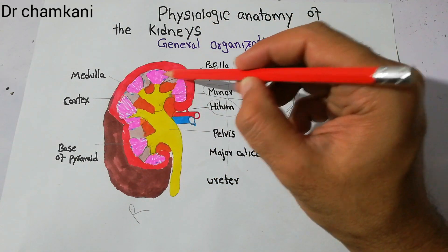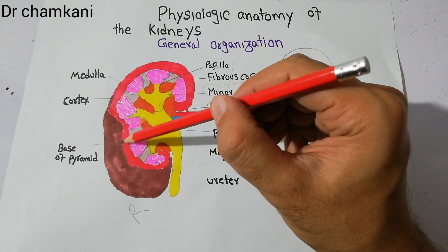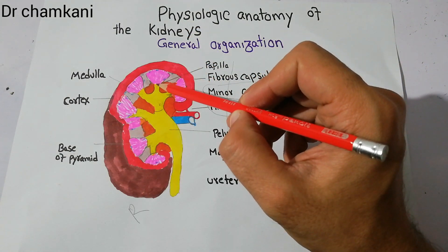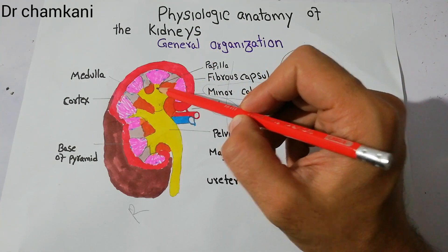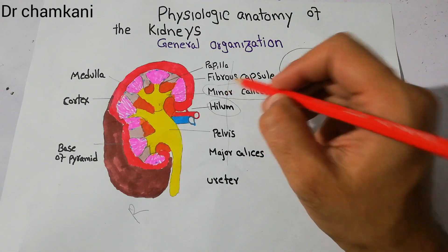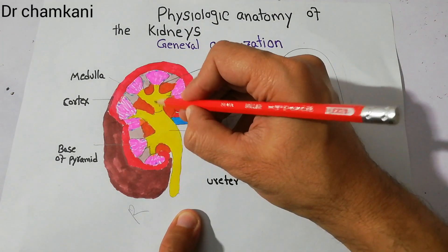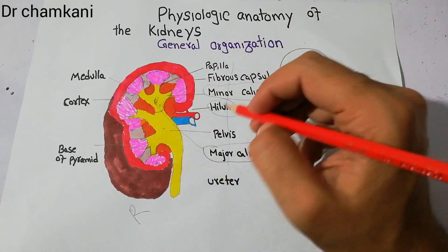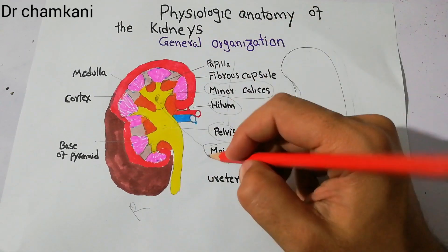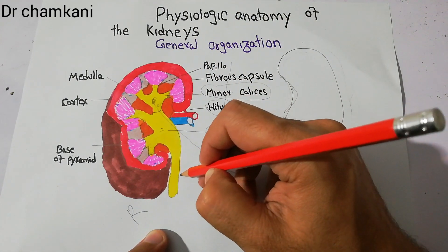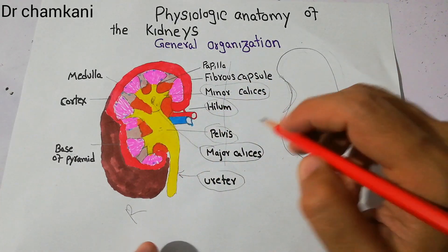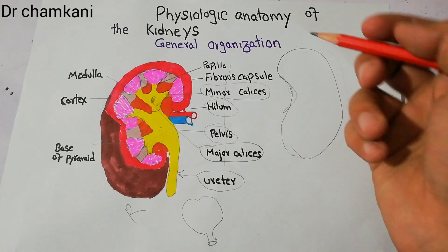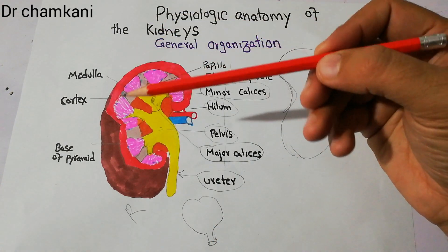In the medulla there are pyramids, which are made of nephrons. Nephrons are important in urine formation. All the nephrons in the pyramid empty at the papilla, the papilla opens into the minor calyces, the minor calyces open into the major calyces, the major calyces empty into the pelvis of the kidney, and then the pelvis empties into the ureter. The ureter takes urine to the urinary bladder, and from the bladder through the urethra, urine goes out of the body.